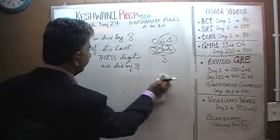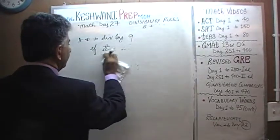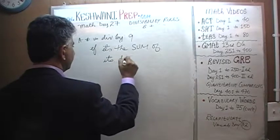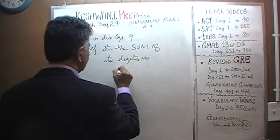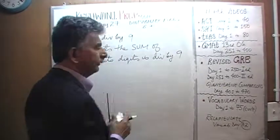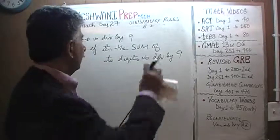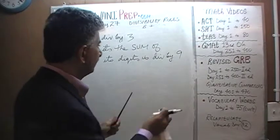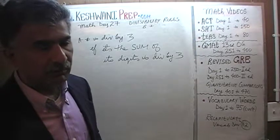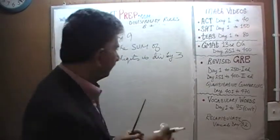Let's move on and talk about 9. A number is divisible by 9 if the sum of its digits is divisible by 9. The rule for 9 is in that sense exactly the same as the rule for 3 — a number is divisible by 3 if the sum of its digits is divisible by 3. Similarly, a number is divisible by 9 if we can determine that the sum of its digits is divisible by 9.